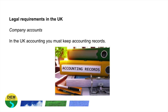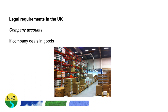So assets and liabilities. If the company deals in goods, the records must contain statements of stock held by the company at the end of each financial year. All statements of stock takings this statement is based on must also be in the records. It must also keep statements of all goods sold and purchased, except goods sold to members of the public by retail sellers. But these statements of all goods must contain listings of goods for buyers and sellers.